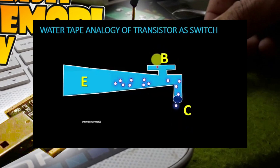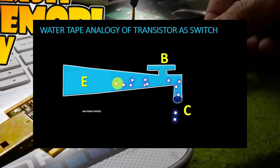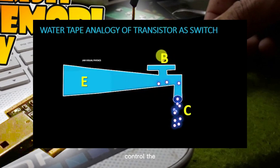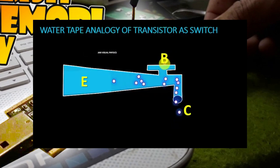The base terminal of the transistor controls the current passing through the transistor. We can turn on or turn off a transistor with the help of the base terminal.